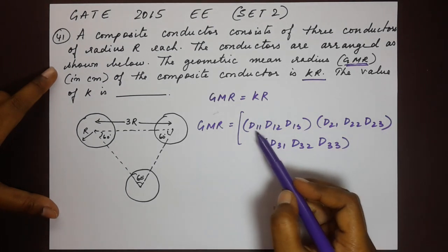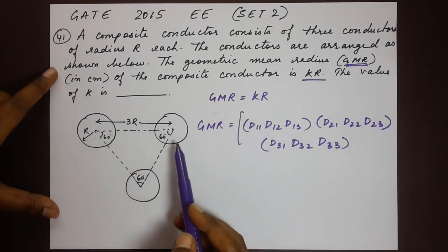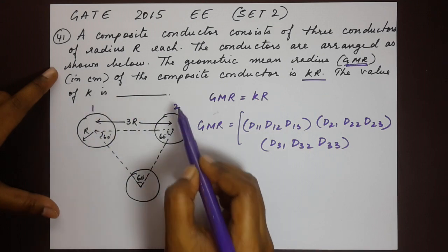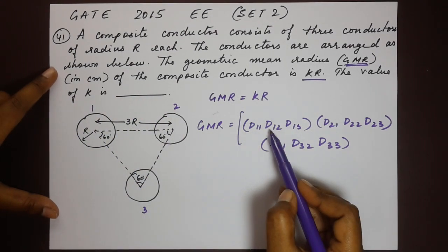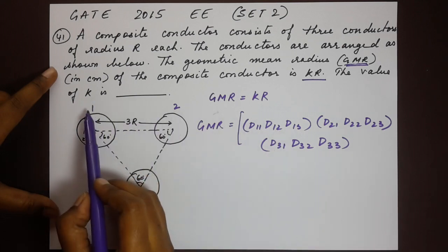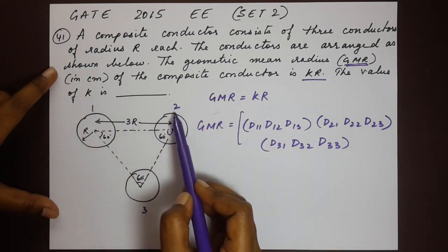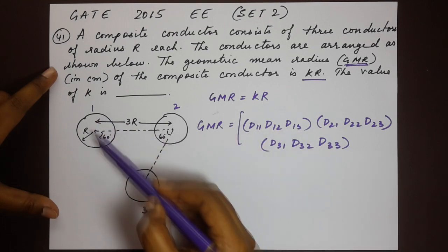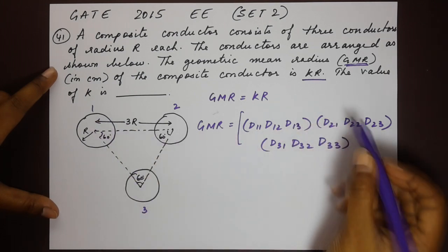Now these are the distances from one conductor to the next. If we assume that this is 1, 2 and 3, d12 is the distance between the first conductor to the second. That's 3r. d13 is from the first conductor to the third and so on.